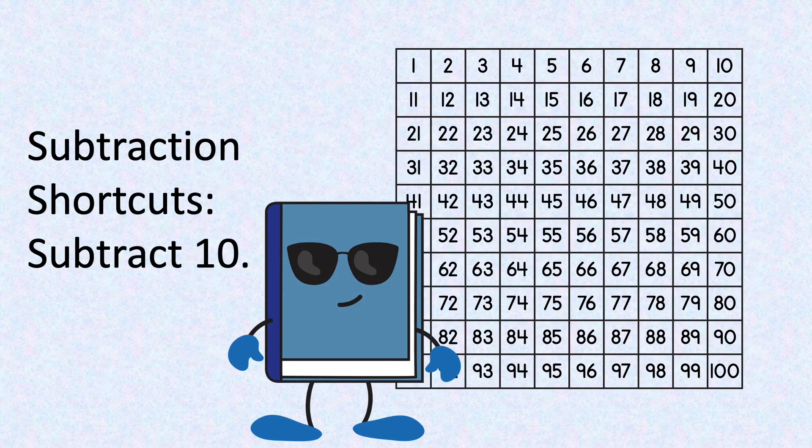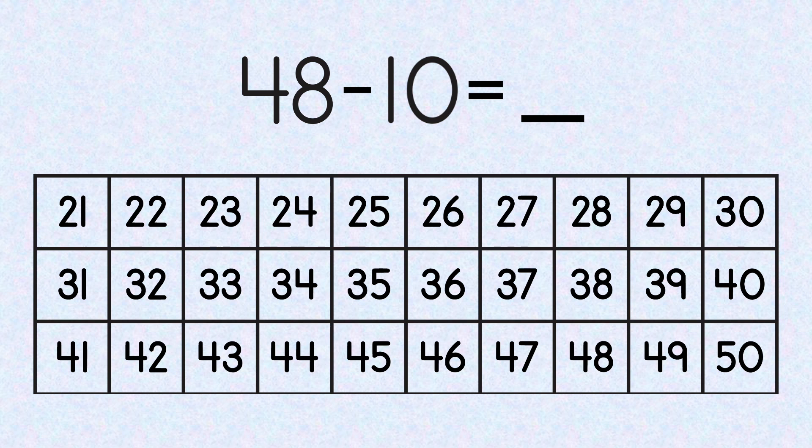Now our second number sentence: 48 minus 10 equals blank. Find 48 on the hundreds chart. Remember, when we subtract 10, we just go to the box above. That's 38. So 48 minus 10 equals 38.